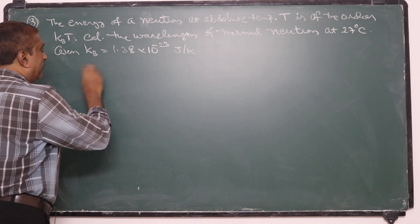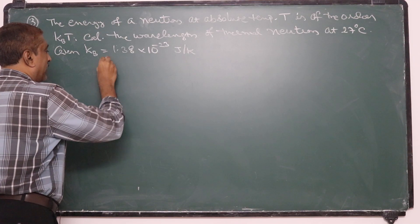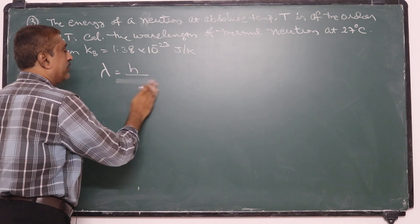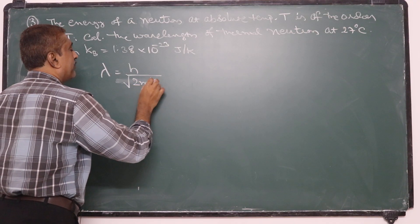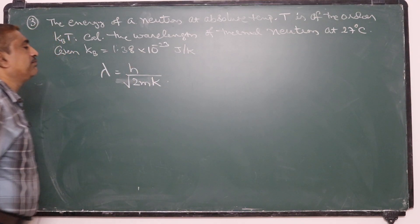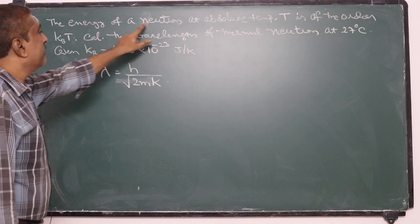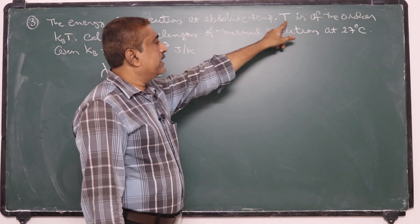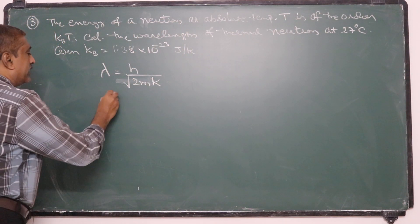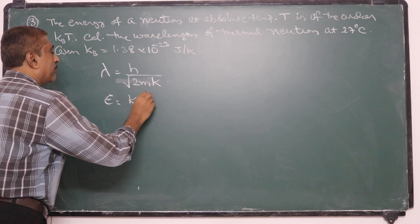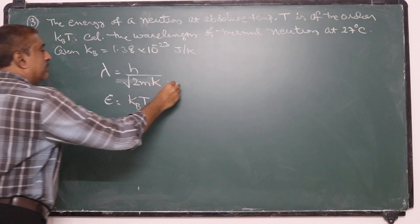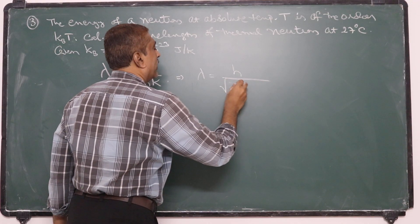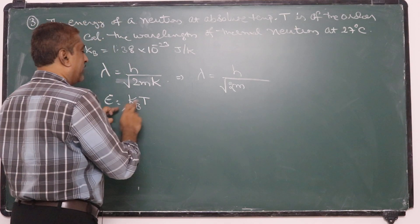The de Broglie wavelength of a moving particle is h/mv, or in terms of kinetic energy K, it is h/√(2mK). Here, the energy of the neutron is a function of k_BT. Given that energy equals k_BT, instead of K we write k_BT directly. So the wavelength is λ = h/√(2m·k_BT).